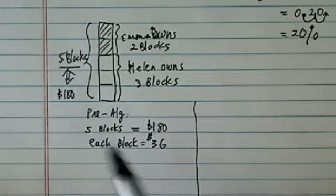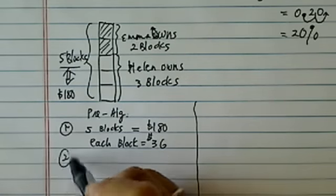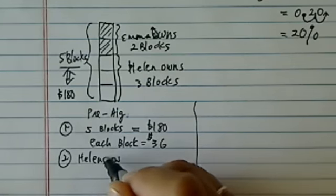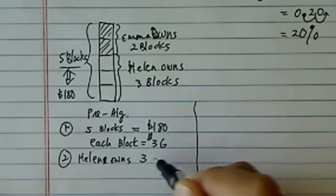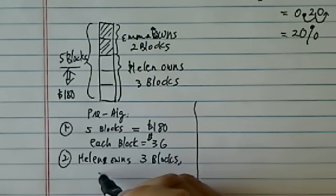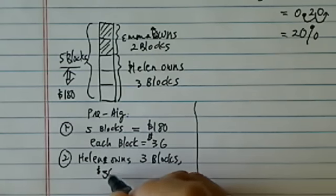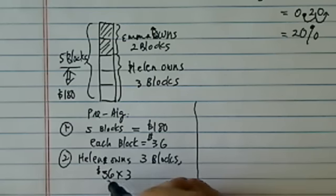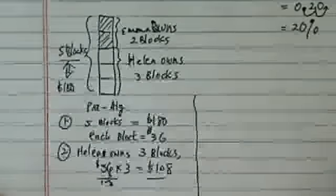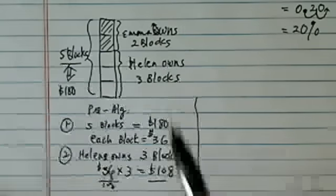That's the first step. The second step, since Helen owns 3 blocks, and each one is $36, so she owns $36 times 3, which is $108. That's how much she owns. This is the pre-algebra method.